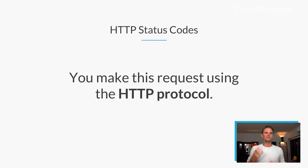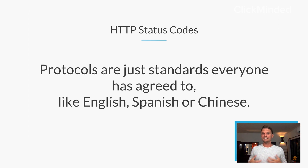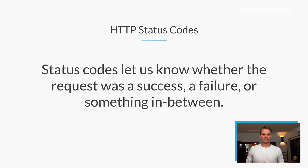You make this request using what we call the HTTP protocol. Protocols are really just standards that everyone on the internet has agreed to. It's no different than English or Spanish or Chinese — it's a language that we've all agreed to. A client makes a request to the server. Status codes let us know whether the request was a success, a failure, or something in between. That's what an HTTP status code is.